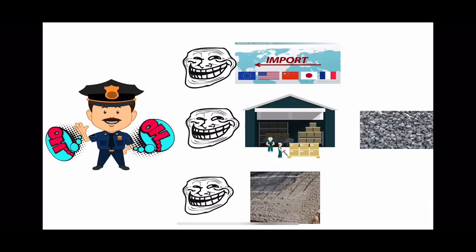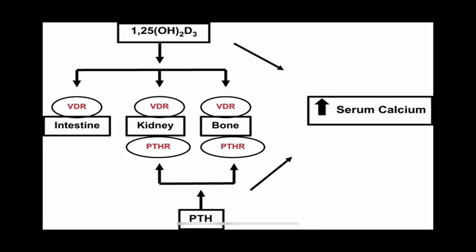The deputy works in conjunction with his informers, which are actually the vitamin D receptors (VDR). Vitamin D receptors are present at the intestine (import side), kidney (export side), and bone (reservoir). All of them try to increase calcium levels in the blood. PTH also has receptors and can act on the export side — the kidney — itself, but not on the intestine. That is to be noted.